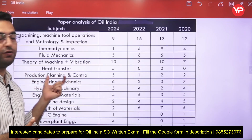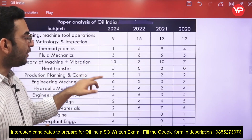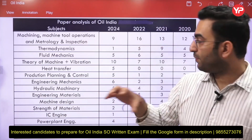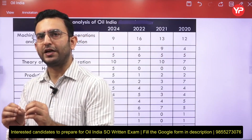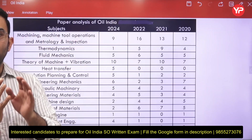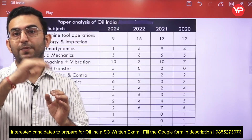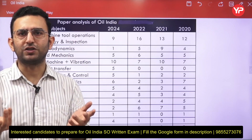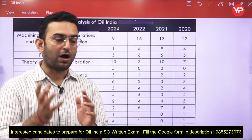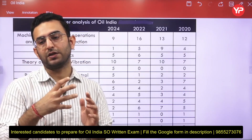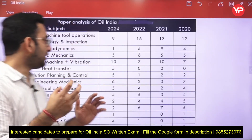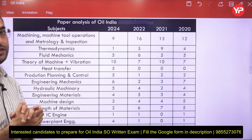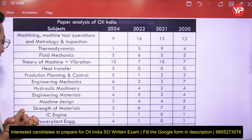Engineering mechanics is also very important for this exam, with five questions directly asked from it. The questions are not very tough — basic questions are asked, such as the formula for moment of inertia of a hemisphere, the principle of transmissibility, and D'Alembert's principle. These are the types of topics covered from the engineering mechanics portion.